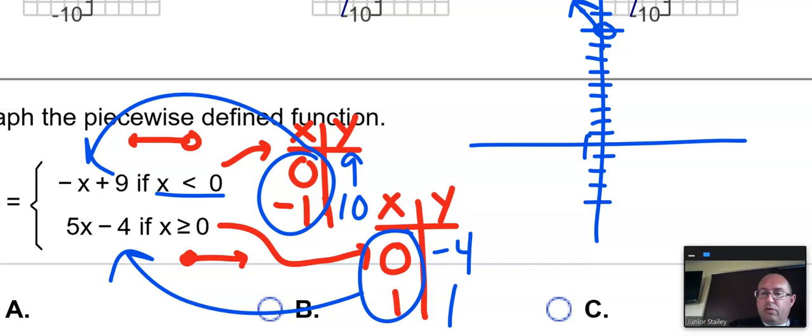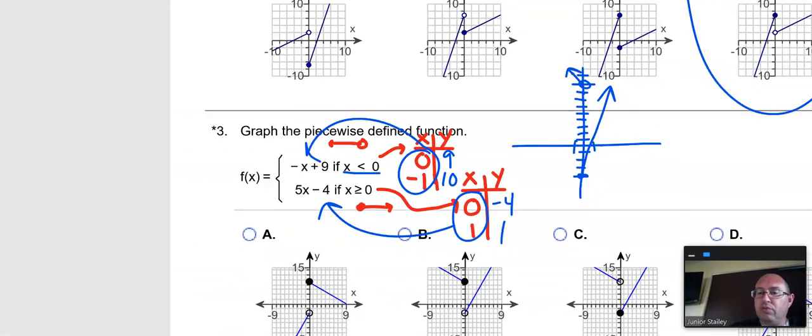And 0, negative 4. 1, 2, 3, 4. That's a closed dot. And it has to go through the point 1, 1, which is up here. So, whoosh, going to be like this. So this is the picture that we're looking for.